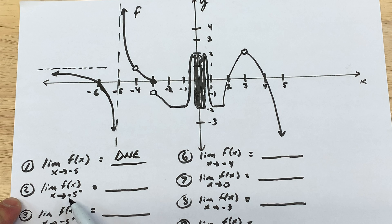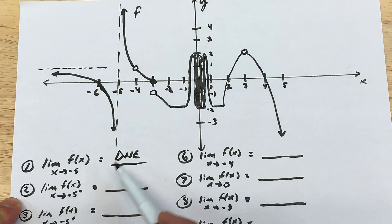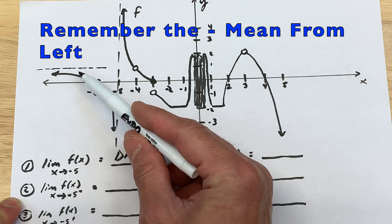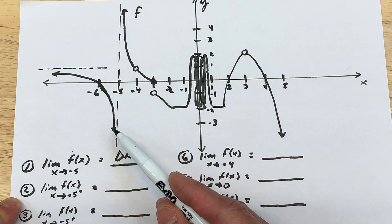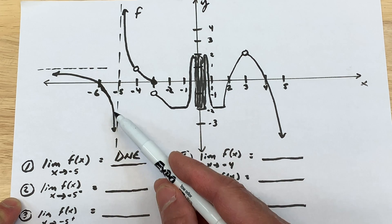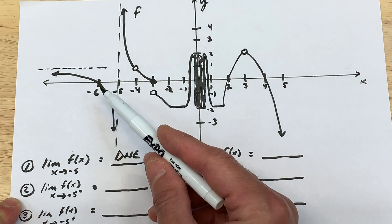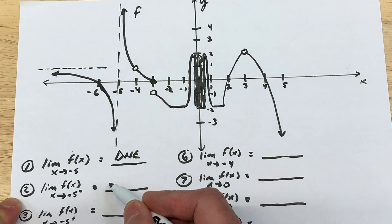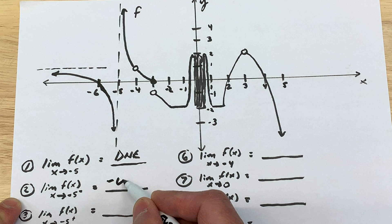For number two: the limit as x approaches negative 5 from the left — see this little minus sign? That means from the left. So when we're approaching negative 5 from the left side, what are the y values getting closer and closer to? Think about what the y value is getting closer to — and you can see the y values are going down towards negative infinity.